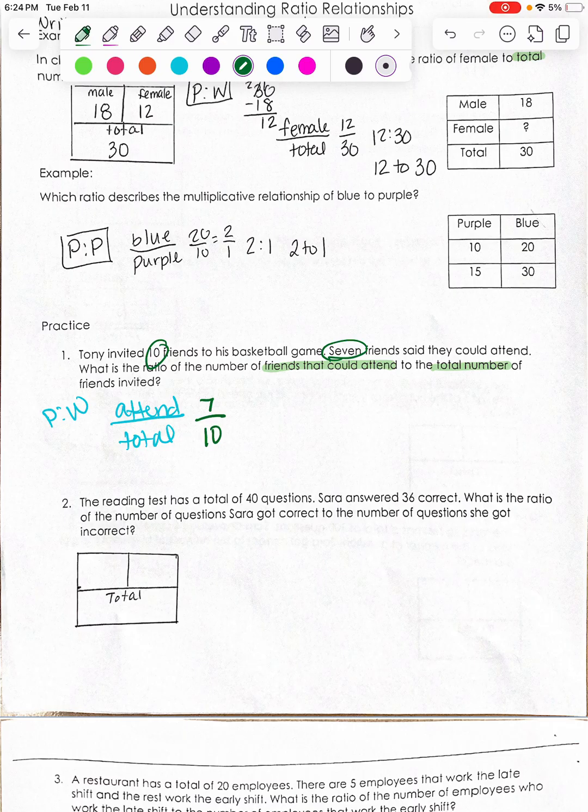So my ratio is 7 to 10. Okay, I'm going to do one more.